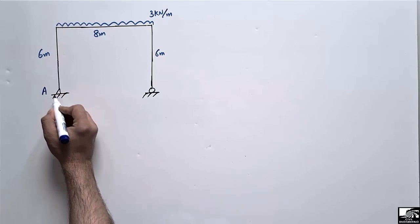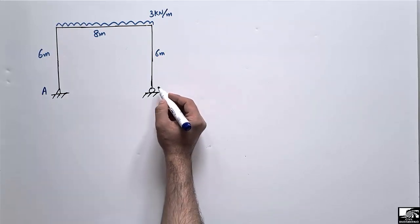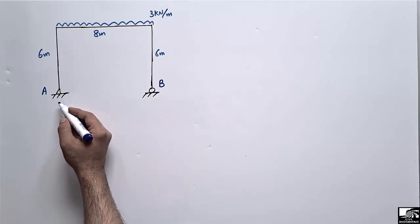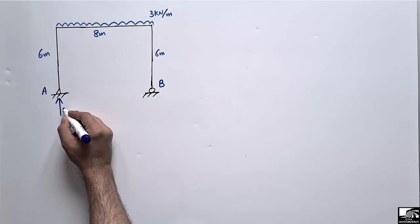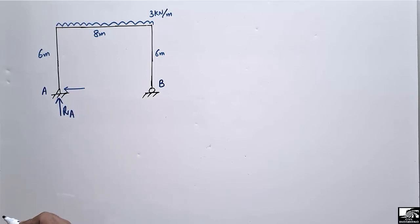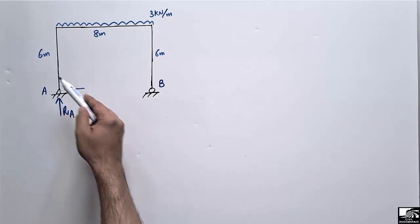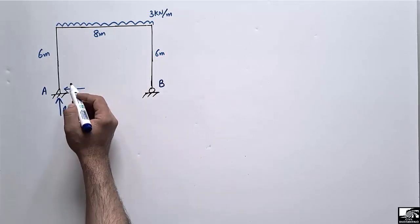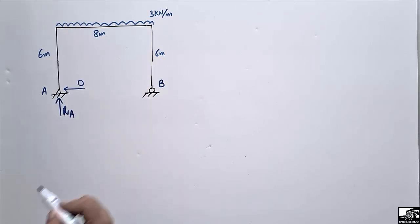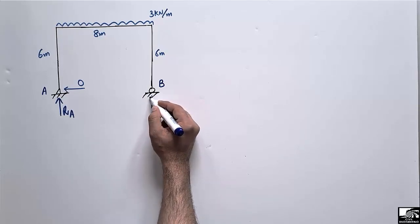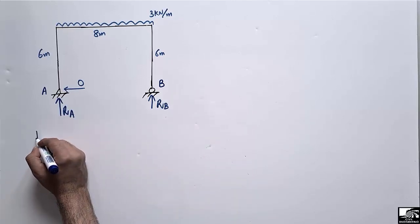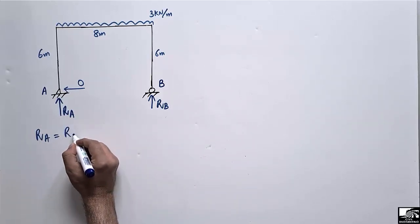The support at A is a hinge support, so it will have both vertical reaction RA and a horizontal reaction. However, since there is no horizontal load acting on this frame, the horizontal component at A will be equal to zero. The support at B is a roller support, so it resists only one component — the vertical reaction RB. We are interested in finding RA and RB.